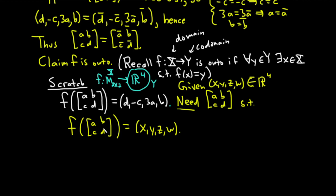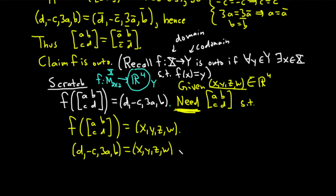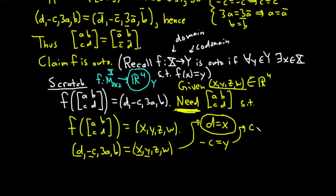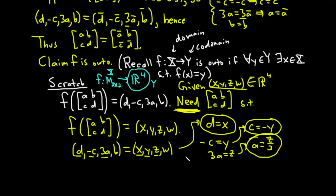Applying f, we get (D, -C, 3A, B) = (x, y, z, w). Solving: D = x, then -C = y so C = -y, then 3A = z so A = z/3, and B = w. So the matrix we need in our proof has entries A = z/3, B = w, C = -y, D = x.